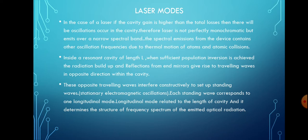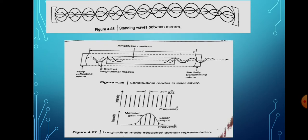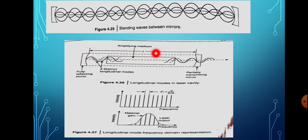These opposite travelling waves interfere constructively to produce standing waves. Waves travel through the cavity and are reflected back. There is interference between forward-travelling waves and backward-travelling waves — this constructive interference produces standing waves.